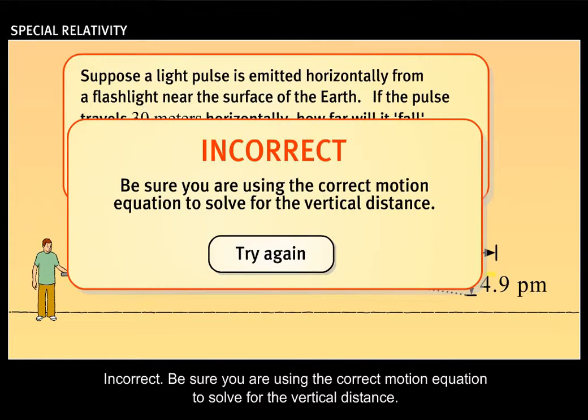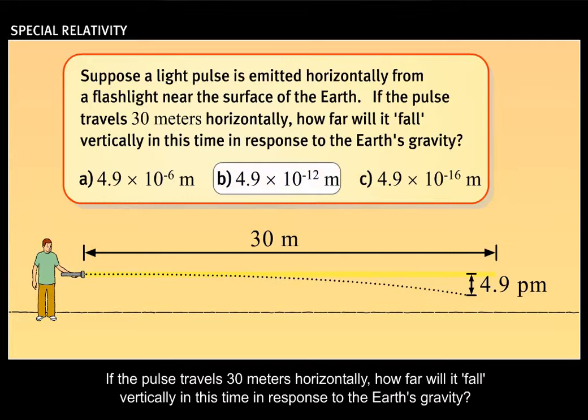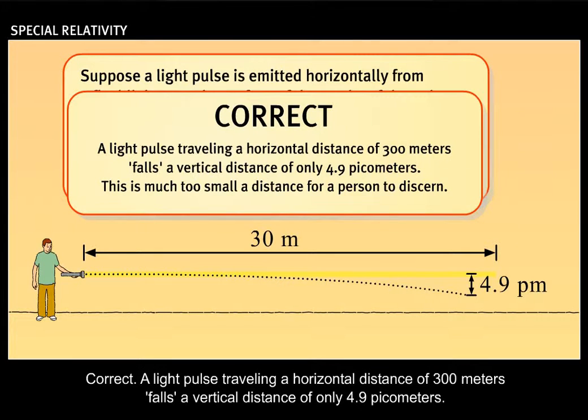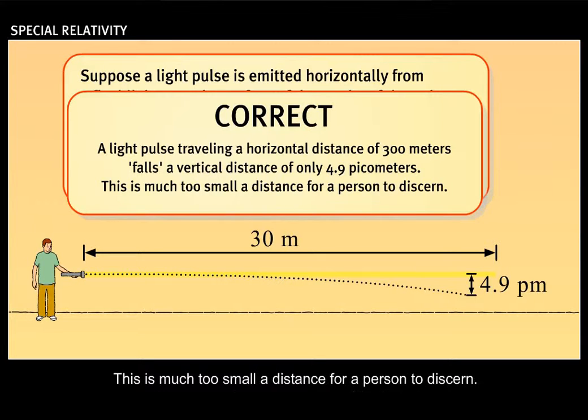Incorrect. Be sure you are using the correct motion equation to solve for the vertical distance. Correct. A light pulse traveling a horizontal distance of 300 meters falls a vertical distance of only 4.9 picometers. This is much too small a distance for a person to discern.